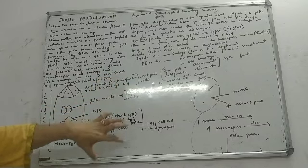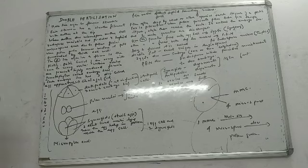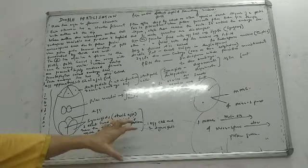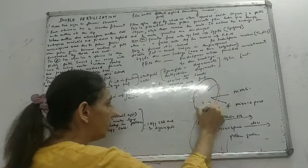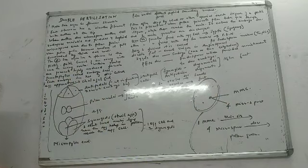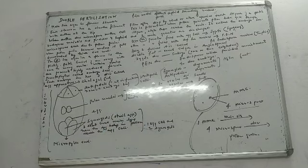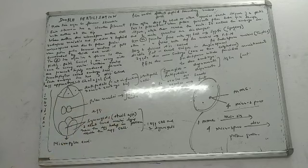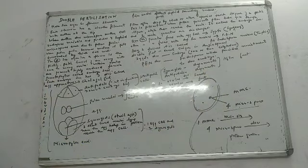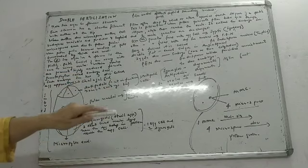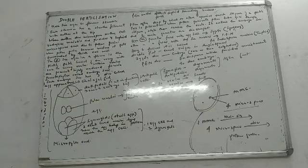Now with this pollen grain — the male sex organ is the stamen, which has a filament and the anther at the tip. The anther has MMCs (microspore mother cells), which undergo meiosis to produce four microspores. Each microspore develops into a pollen grain, and when the pollen becomes mature, it will be surrounded by a thick cell wall.